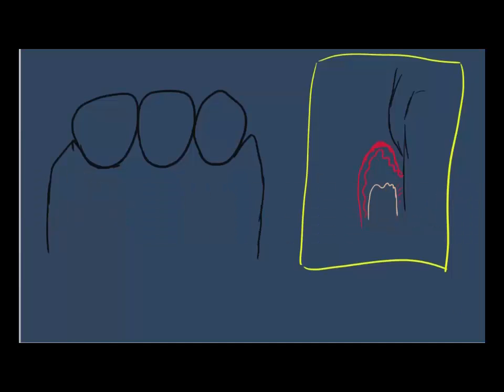Starting with gingivectomy. Gingivectomy is done when there is overgrowth of the gingiva, especially when you are taking some medication, and sometimes it could be hereditary. It becomes difficult for the patient to keep good oral hygiene measures. The first thing you do is identify the pathological depth of the pocket that you want to cut using a periodontal probe.